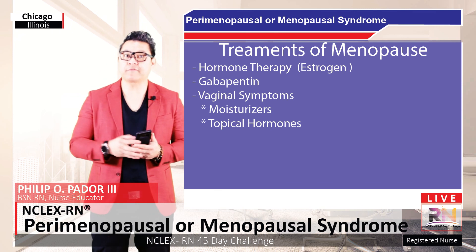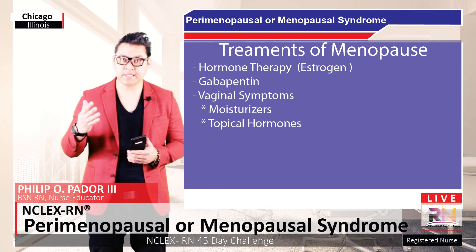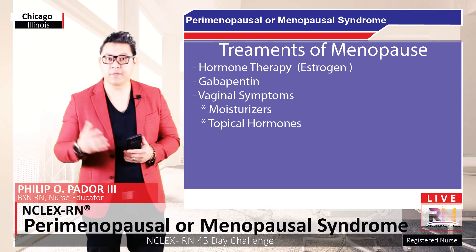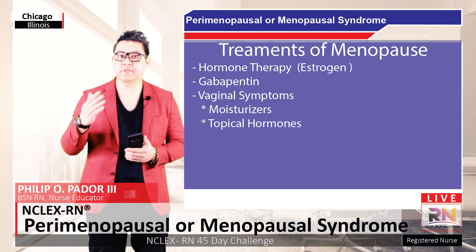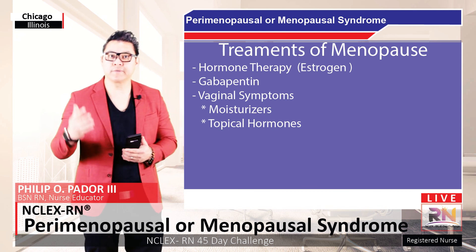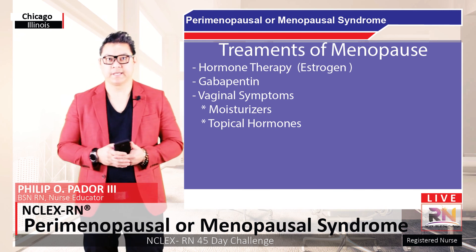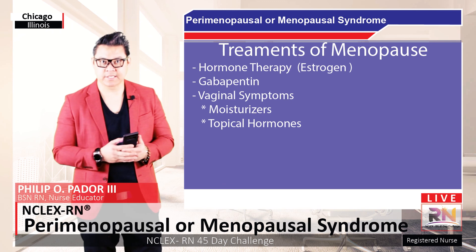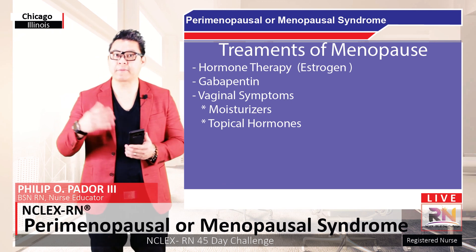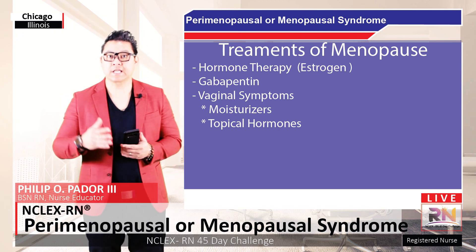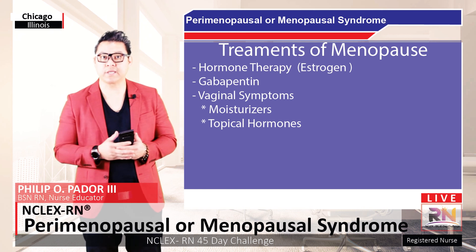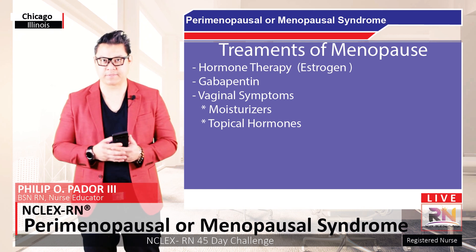There is no prevention for menopause — it is a normal physiological process that occurs in females. However, treatments are available to help with the symptoms, including hormonal therapy with administration of estrogens. Other options include gabapentin, as well as moisturizers and topical hormones to treat vaginal symptoms.